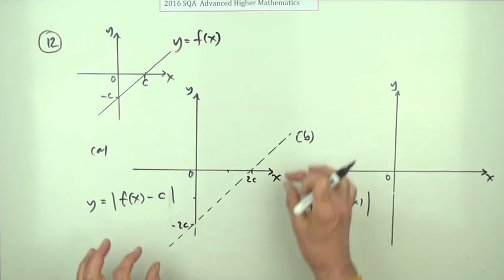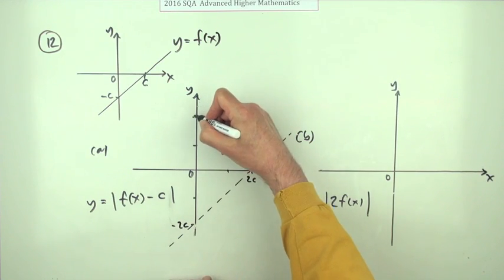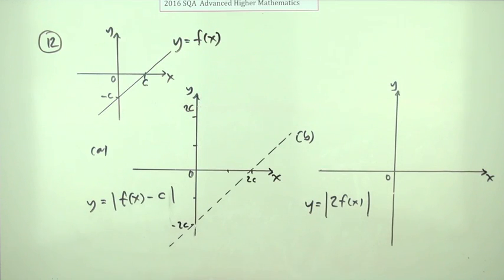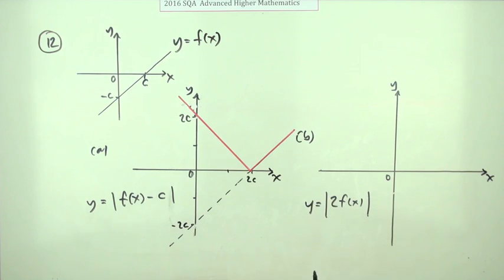The absolute value means any negative parts become positive parts. Instead of going through negative 2c, it'll go through 2c. So now you can put it in properly - that's the first one.